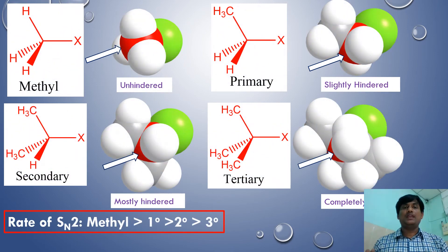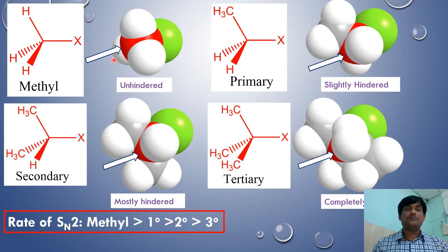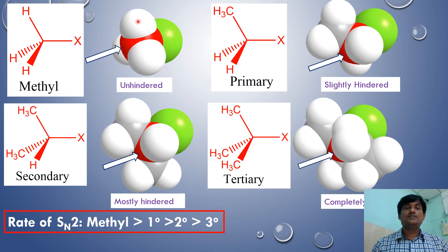The rate of an SN2 reaction depends on steric factors — the greater the steric hindrance around the reaction center, the lower the rate. For methyl halide, the green color indicates halogen and the red color indicates the reaction center carbon, with three hydrogens attached. The nucleophile can approach the reaction center easily due to minimal steric hindrance from the small hydrogen atoms.